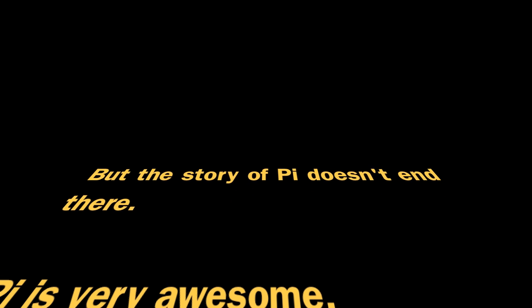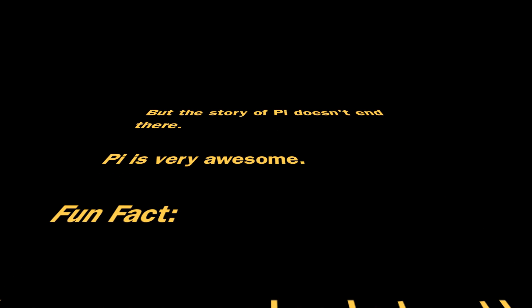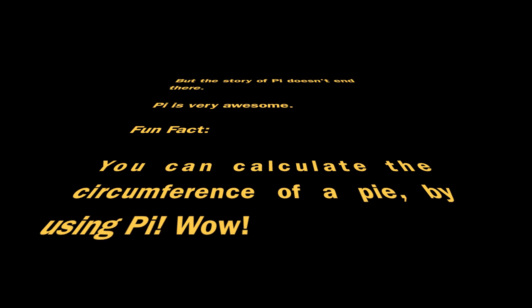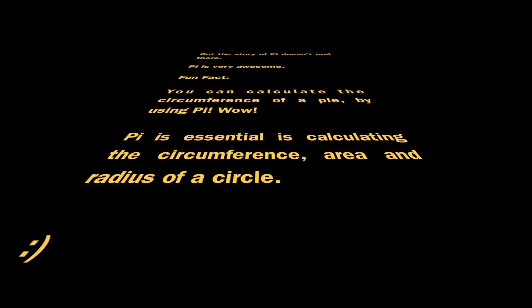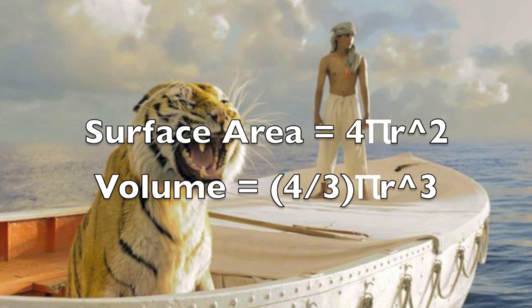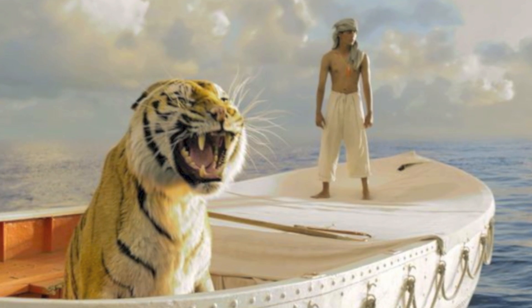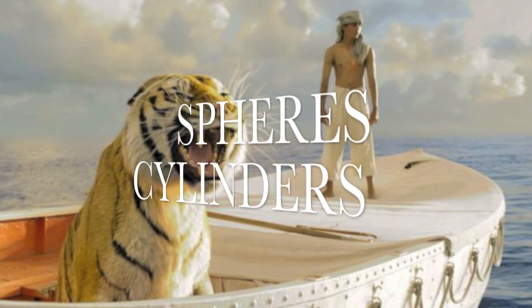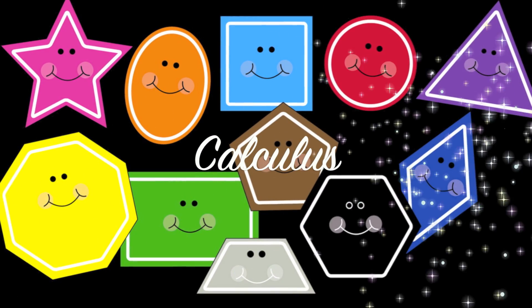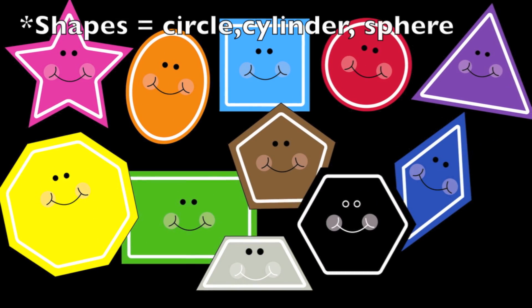But the story of Pi doesn't end there. Far beyond approximating Pi and memorizing this rational number to many decimal places, Pi's intimate relationship with circles makes it essential to calculating the circumference, radius, and area of a circle. It is also used in surface area and volume calculations for 3D shapes involving circles, such as spheres or cylinders, and is integral to calculus involving functions relating to any of these shapes.